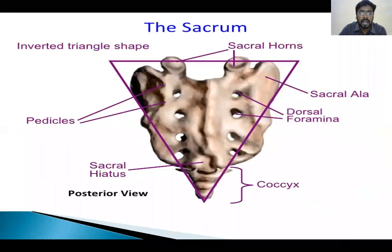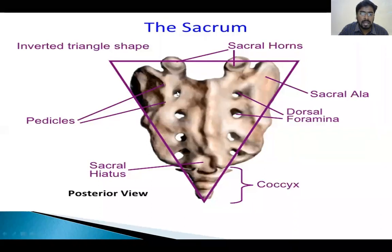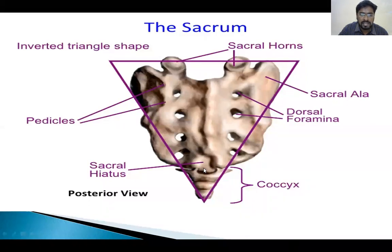Coming to the sacrum: the sacrum looks like an inverted triangle. It has sacral horns for articulating with the coccygeal vertebra and the sacral alae. These are the sacral foramina for exit of the sacral nerves. This bony defect is called the sacral hiatus.